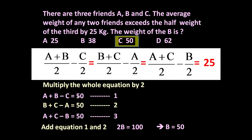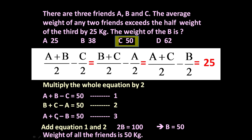If you see, all three equations are similar. Solving for A or C gives the same result — the weight of all three friends A, B and C is equal, at 50 kg each. You can verify: 50 + 50 = 100, divided by 2 is 50, minus 50/2 (which is 25) gives 50 − 25 = 25. Confirmed!